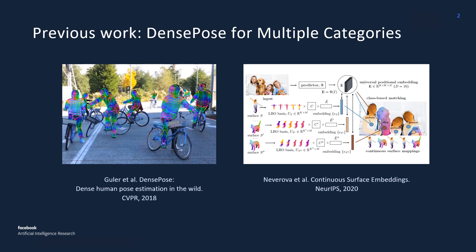Recent work has shown that it is possible to learn a unified dense pose predictor for several categories of related objects. However, training such models requires initializing inter-category correspondences by hand. In this paper, we show that improved correspondences can be learned automatically as an actual byproduct of learning category-specific dense pose predictors.